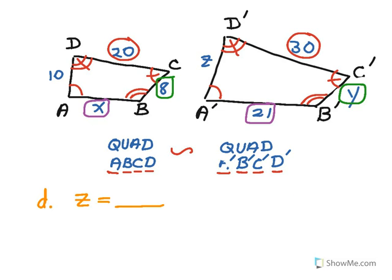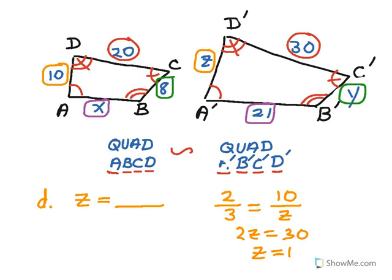Lastly, I want to find the length of Z. And Z is in the big quadrilateral. Z is that side, A'D', so the corresponding side in the smaller one is 10. The scale factor, small to big, should be equal to the same ratio as 10 to the side that's Z long. So, 2Z is equal to 30. And so, Z is equal to 15.